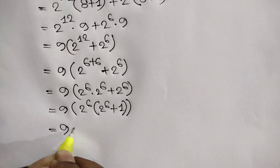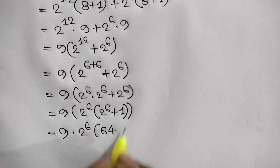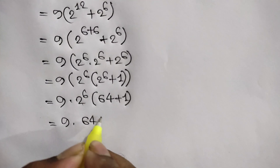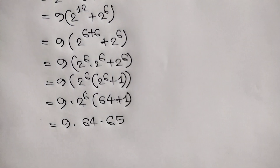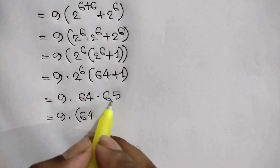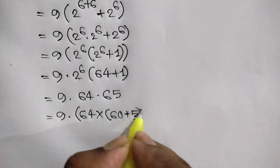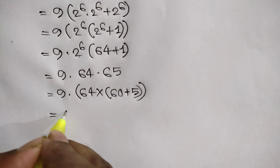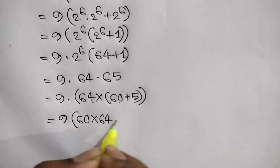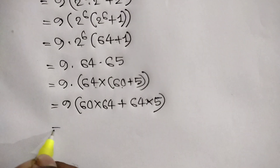This equals 9 times 2 to the power 6 times (64 plus 1), which is 9 times 64 times 65. Now 65 can be written as 60 plus 5, so this becomes 9 times (64 times 60 plus 64 times 5).